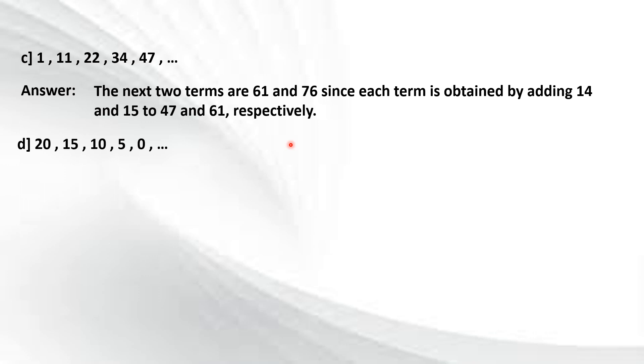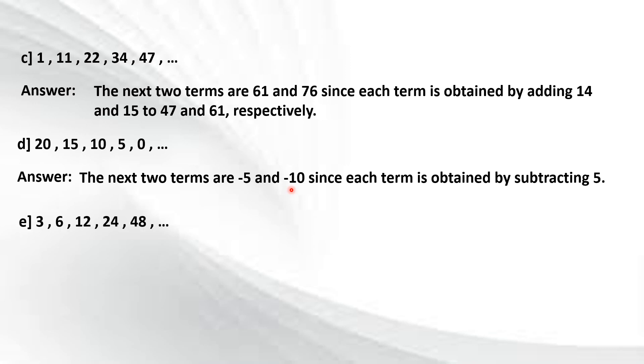Letter D, number 4: we have 20, 15, 10, 5, and 0. As you can see, it is decreasing. The answer is that the next two terms are negative 5 and negative 10 since each term is obtained by subtracting 5. So 20 minus 5, we have 15. Then 15 minus 5, that's 10. Then 10 minus 5, 5. Then 5 minus 5 is 0. Then 0 minus 5 is negative 5. Then negative 5 minus 5, that is negative 10.